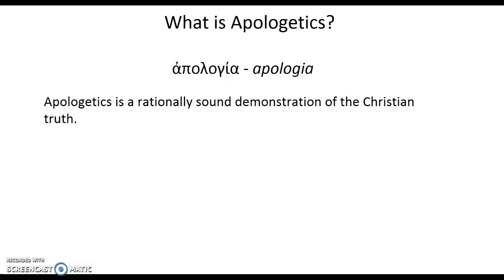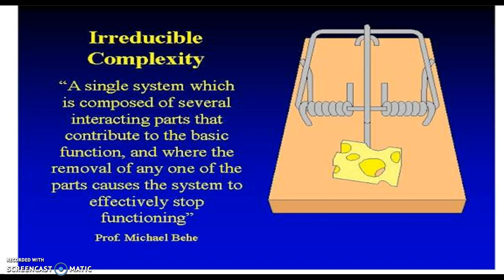In your readings you will cover the argument for God based on intelligent design, and one of the arguments there is an argument from what's called irreducible complexity. This basically argues that if you find some kind of machine that shows evidence of design because you cannot reduce it beyond a certain point, then there must be a designer. A mousetrap is a very simple machine with very few parts.